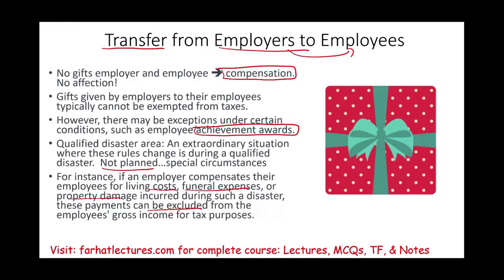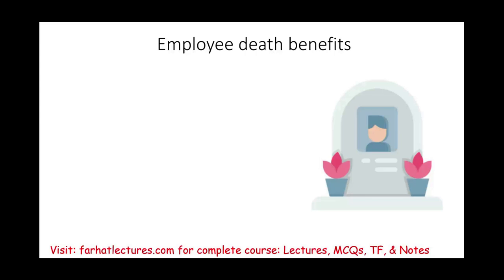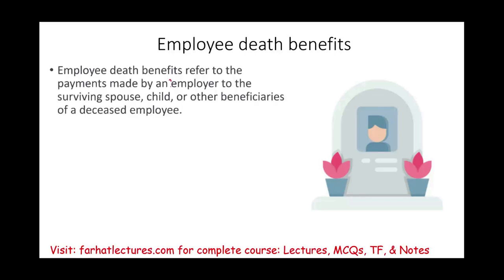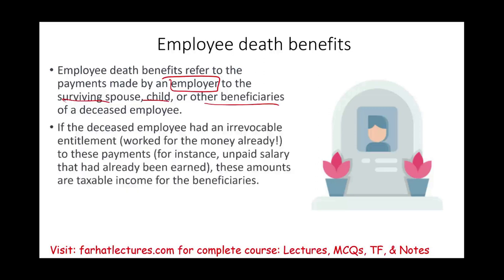Under those circumstances it's a different story, because the employer is going above and beyond — they did not plan for this. How about employee death benefits? An employee death benefit refers to payment made by an employer to the surviving spouse, child, or other beneficiaries of the deceased employee. If the deceased employee had an irrevocable entitlement — meaning the employee already worked for the money — we're dealing with unpaid salaries, and those amounts are taxable.